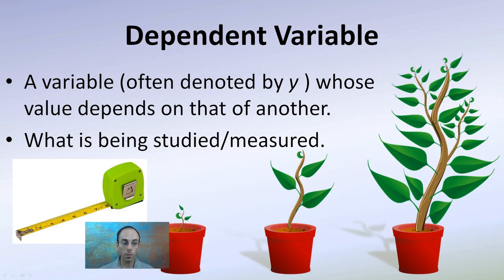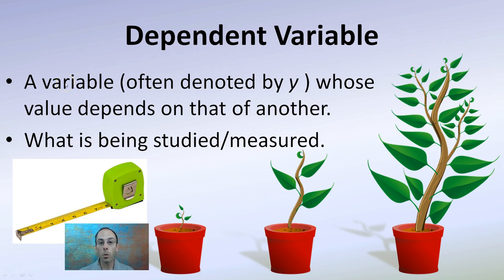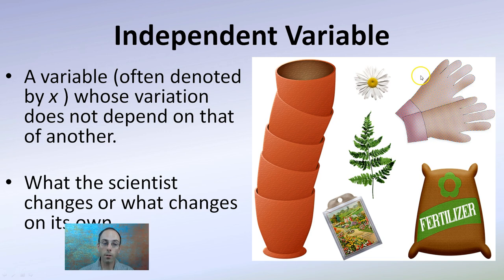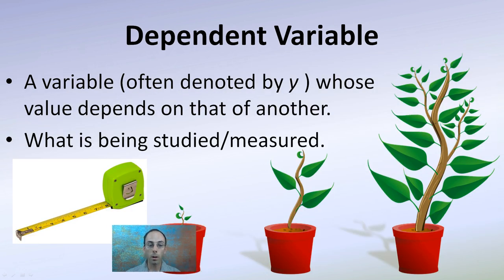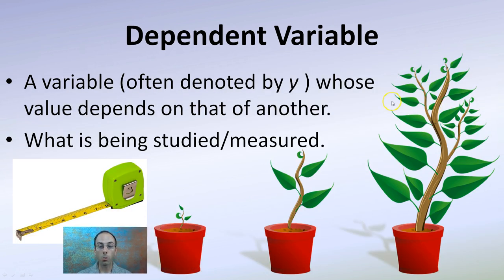In contrast, the dependent variable is often denoted by y, whose value depends on that of another — it's what is being studied or measured. So if our independent variable is the fertilizer, our dependent variable would be the height or how big the plant is growing. A lot of students confuse those two, but that example should make it clear.